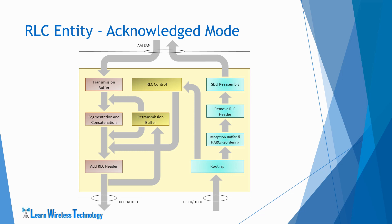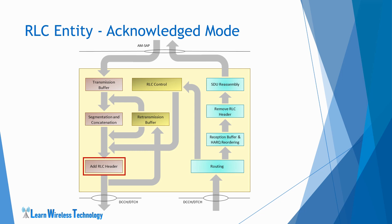The transmitting side of the acknowledged mode RLC entity supports retransmission of RLC PDUs. Hence the RLC PDUs are placed in a retransmission buffer. If a positive acknowledgement or ACK is received, the data in the retransmission buffer is cleared. If a negative acknowledgement or NAK is received, the transmitting entity schedules a retransmission.